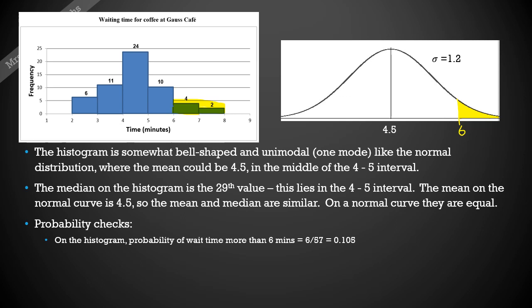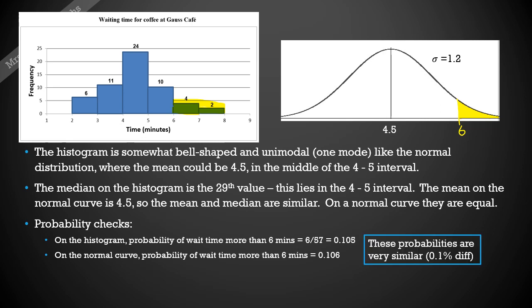You do your regular normal calculations, pop it into a calculator or read off the table to find out what's the probability of it being more than six on that normal curve, and that comes to 0.106, which you can see is very similar. There's only a 0.1% difference there, or 0.001. So that's also supporting this claim that it can match up to the normal distribution.